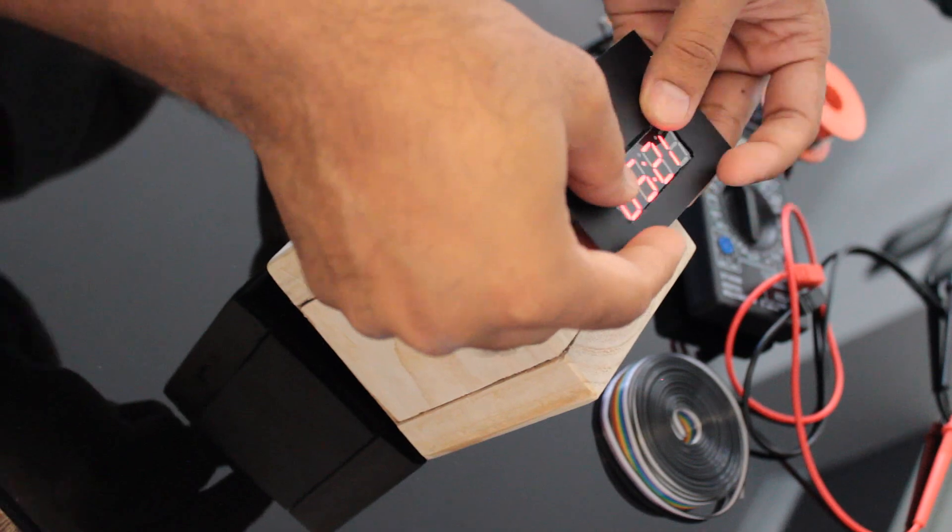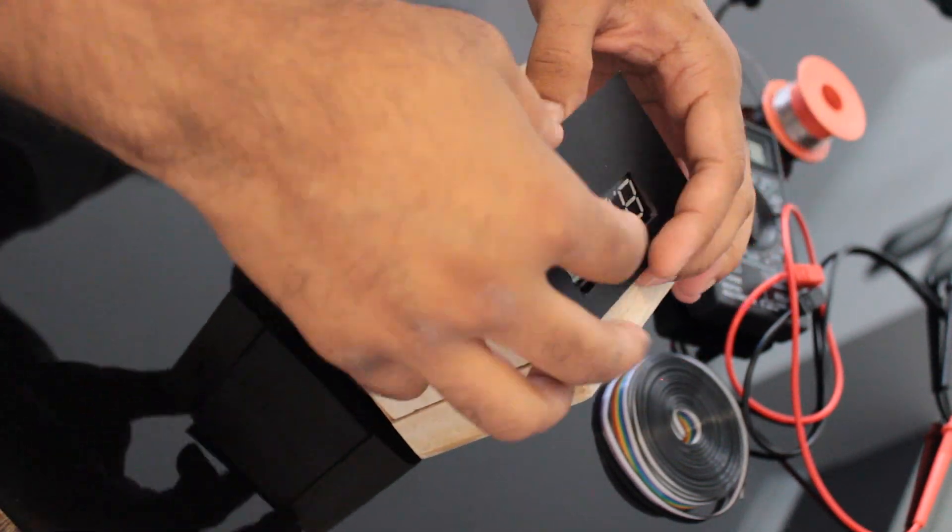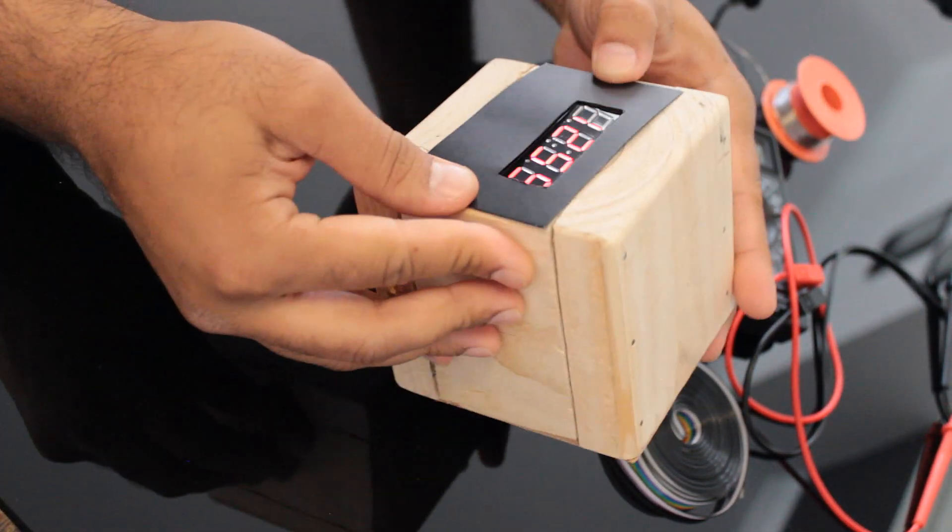To finish up the project, I'm going to stick the 7-segment display to the faceplate and then hot glue it to the front side of the wooden enclosure.